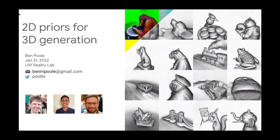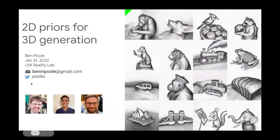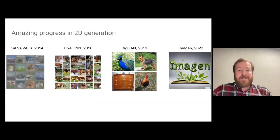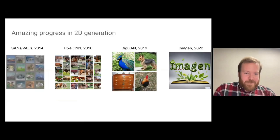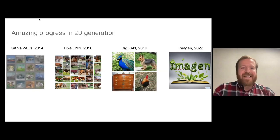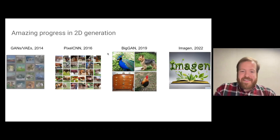This is work with an amazing team: Ben Mildenhall, Ajay Jain, and Jon Barron at Google Research. Hopefully by the end of this talk you'll have a sense of how to create 3D models from text prompts. It's been a crazy ten years in 2D generation. When I started grad school, generative image models produced results like a GAN trained on CIFAR-10. Now, with diffusion models, you can create almost anything you want.